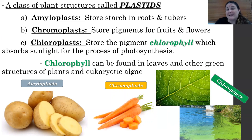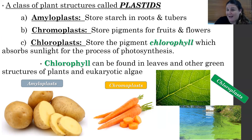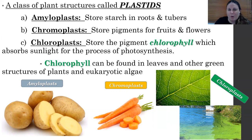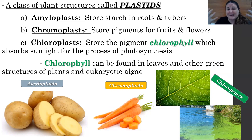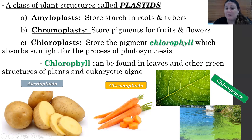Chloroplasts are in a class of plant structures referred to as plastids. There are other plastids too, like amyloplasts, which store starch in roots and tubers — like a potato. Amyloplasts are named because starch is made out of amylose and amylopectin, and those polysaccharides are what's being stored. There are also chromoplasts, which are plastids that store pigments for fruits and flowers — like what gives a carrot its color.